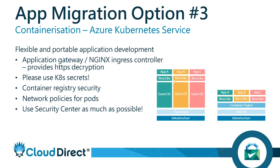If you use the premium tier of Azure Container Registry, you can take advantage of firewall controls to manage who can pull and push images. Without that configuration, anyone with permissions or access to the master username and password can pull and push. Private link for Container Registry is currently in preview, but hopefully will be generally available soon, allowing you to keep the registry on an internal network rather than a public endpoint.